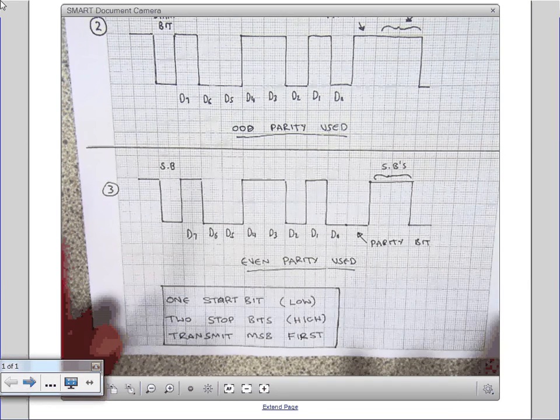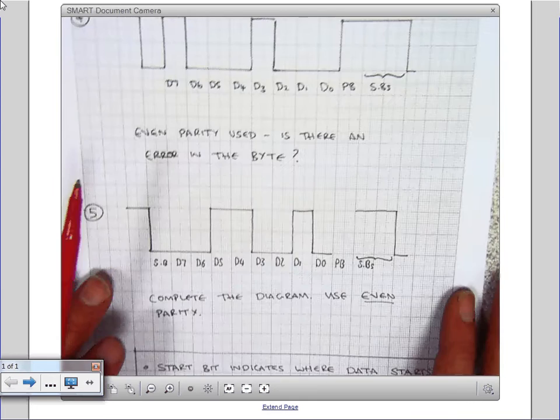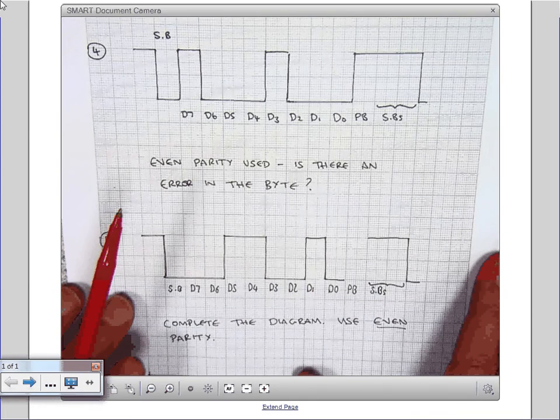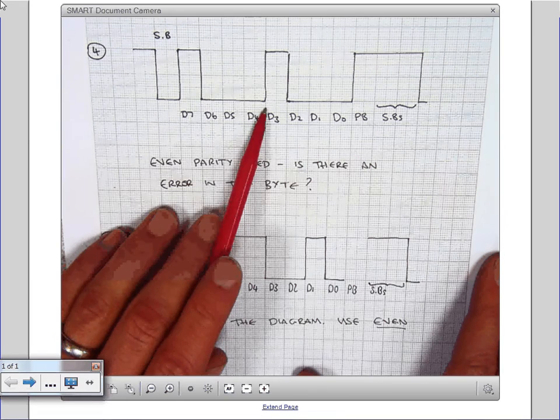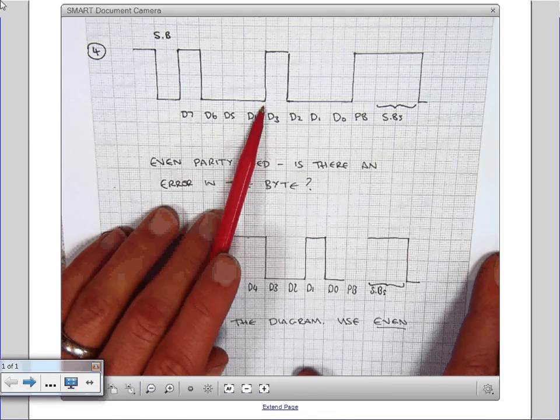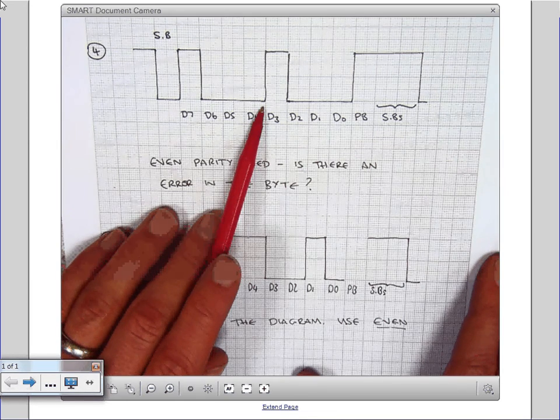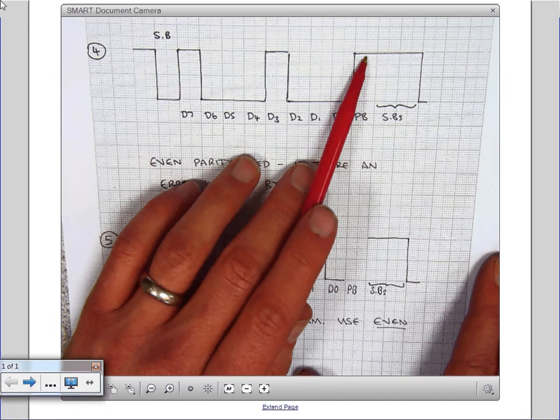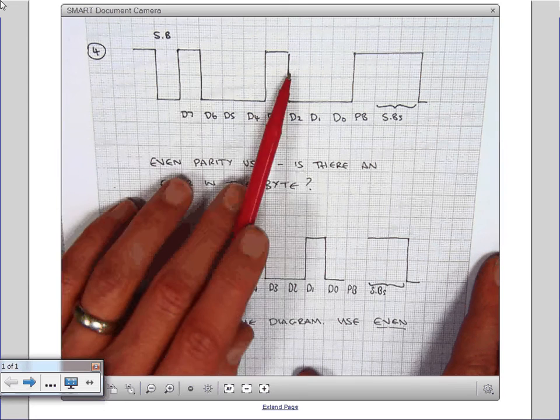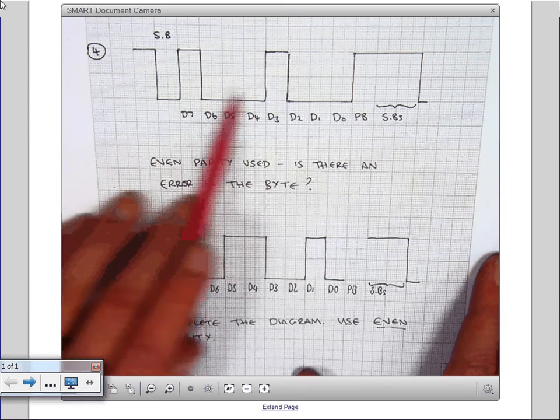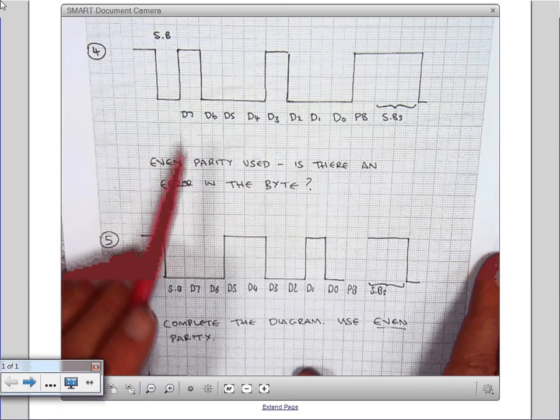So if we turn over the page, here's a chance, if we look at diagram number four, here's a chance for you to pause this and think through yourself. So even parity has been used here. So if the transmitter told the receiver they'd used an even parity, and if the parity bit was high as received by the receiver, and if the receiver detected one and a one here, and all zeros for the other bits, is there an error in the byte? So you pause it and think about that.